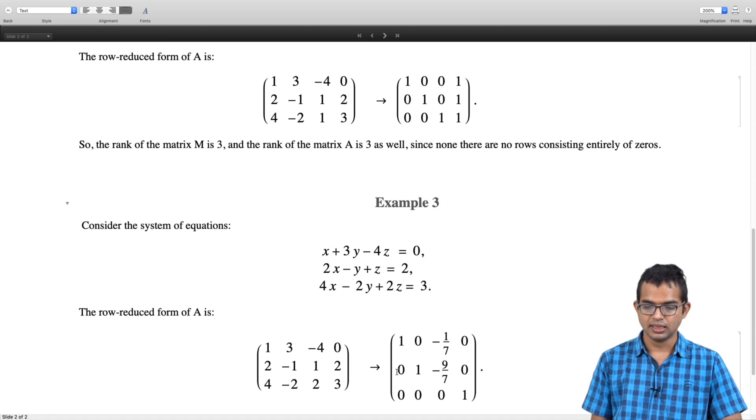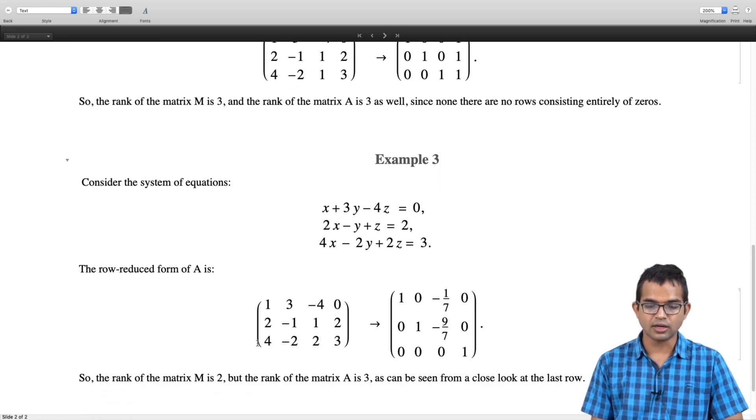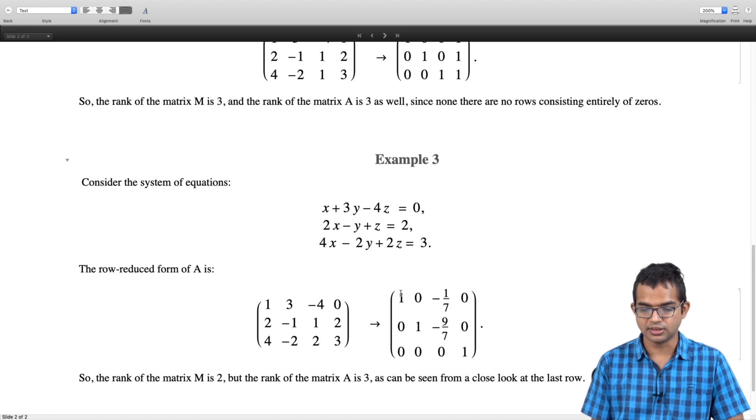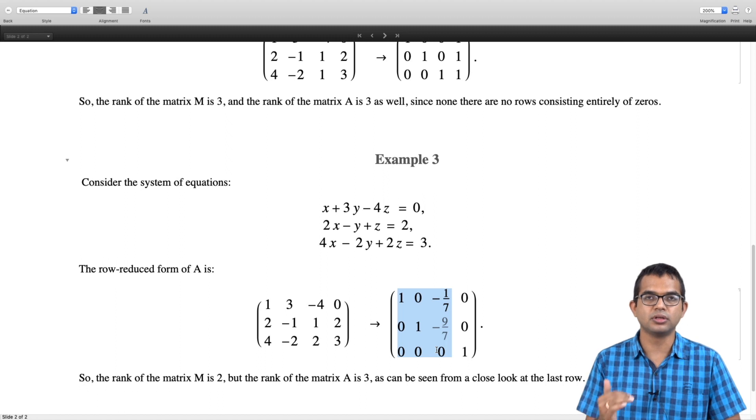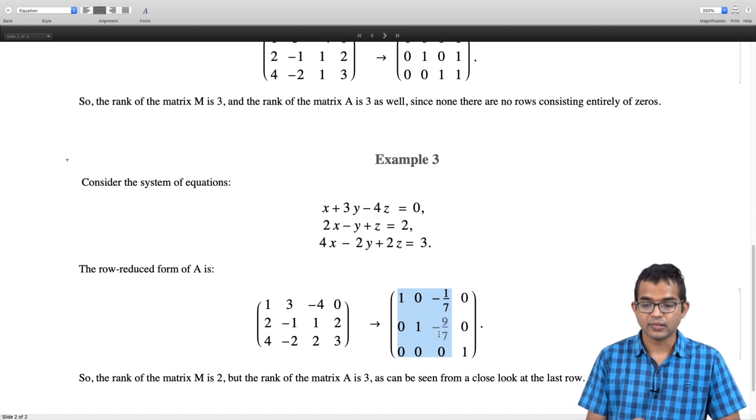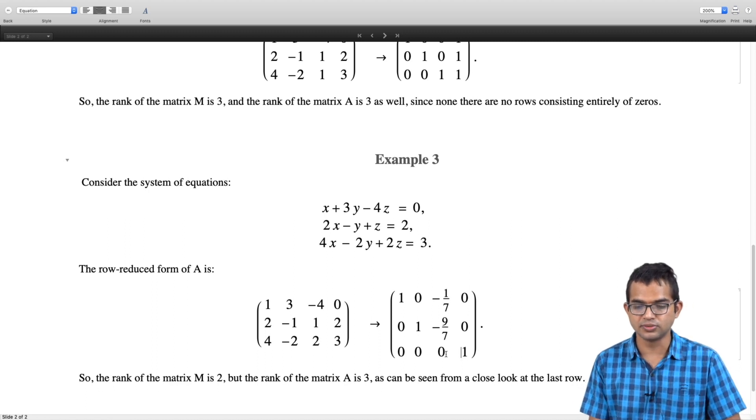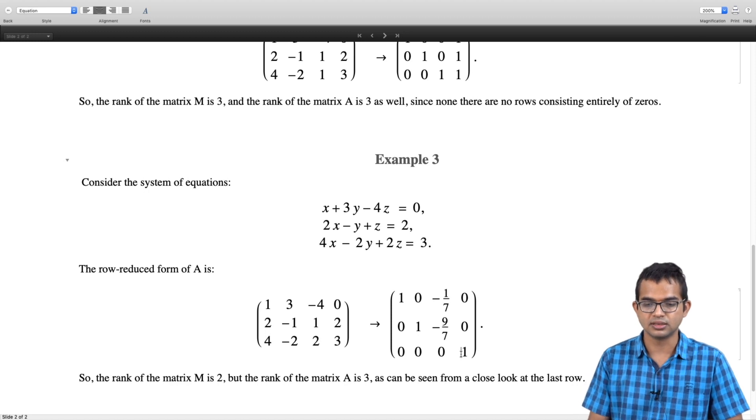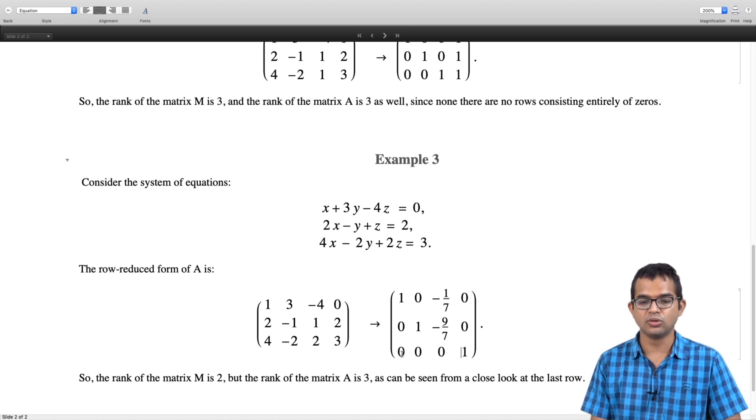Here what you observe is the rank of matrix M is only 2 because if you look at these elements here—this is matrix M—you see that the third row contains no information, it is all 0. So it has only 2 rows worth of information, so it is a rank 2 matrix. Whereas the full augmented matrix is a rank 3 matrix because there is this 1 sitting here. But if you look at it carefully, what this means is we are saying 0 = 1, which is nonsensical. That is what the third equation is saying: 0x + 0y + 0z = 1, which can never happen.